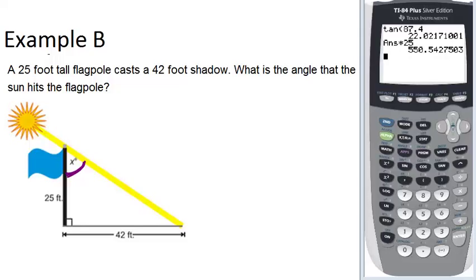So in this case, the first thing you want to do is label the sides according to this angle. From angle X, 42 would be the opposite side and 25 would be the adjacent side.